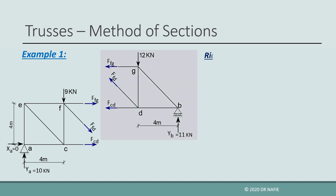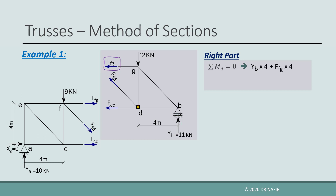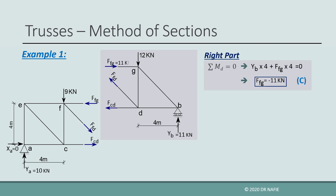We start by working on the right part and take the moment about point D. We notice that the forces in CD and FD, as well as the 12 kN force, all pass through point D and will not be included in the moment equation. The equation includes YB multiplied by a 4 m arm, counterclockwise positive, and the force in FG multiplied by a 4 m arm, also counterclockwise positive. Both terms must sum to zero, giving a value of negative 11 kN for the force in FG. Therefore, the force in FG is compression and should be reversed.